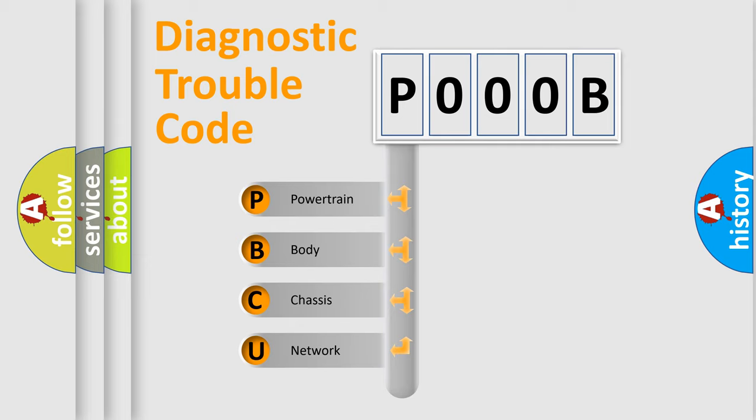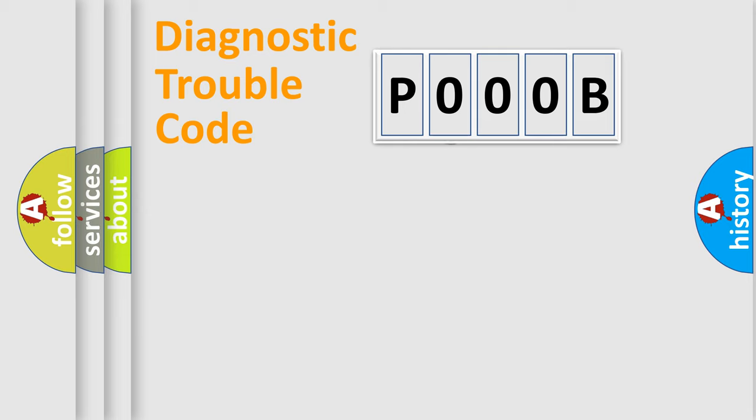We divide the electric system of automobile into four basic units: Powertrain, Body, Chassis, and Network. This distribution is defined in the first character code.